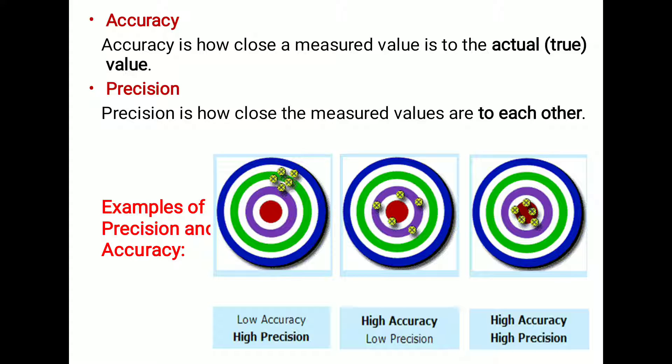The second figure shows that all the obtained values are near to the central target value, but they are scattered — this represents high accuracy but low precision. The third figure shows the actual values both at the mean central value and very close to each other, giving high accuracy and high precision. In this way, accuracy and precision can be understood using these examples.